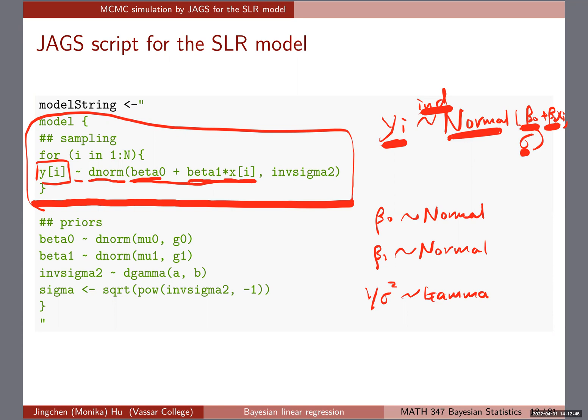Don't forget — this is easy to make a mistake — dnorm in JAX takes precision, not standard deviation. So instead of sigma, we give the inverse sigma squared. I've seen this mistake before, so I want to highlight it again: it's important to keep in mind that we're using precision in dnorm. That's just how JAX syntax works.